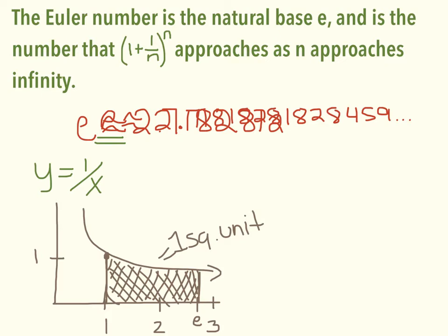Alright, so we just need to know that E is about 2.718, and then we need to be able to work with it as if it was any other number.